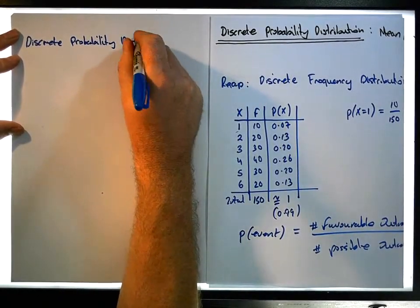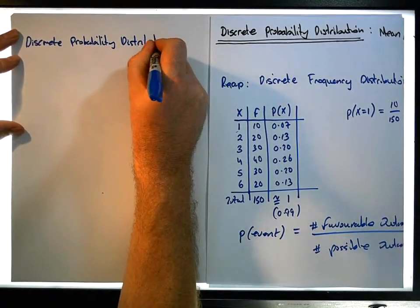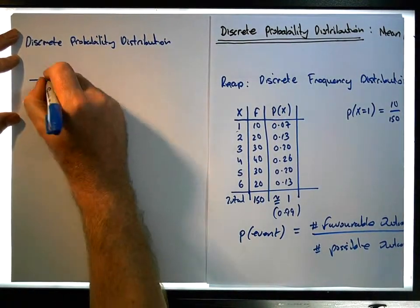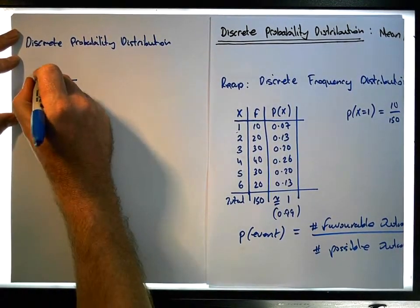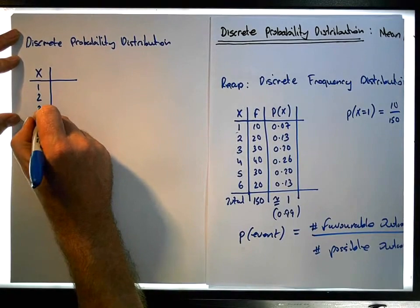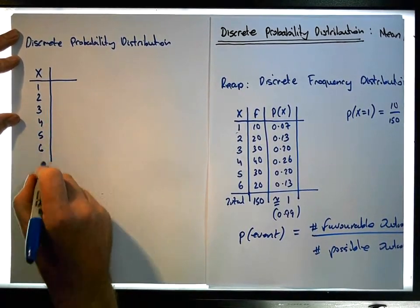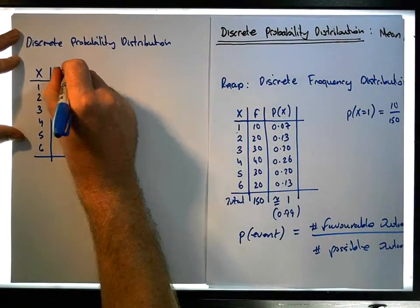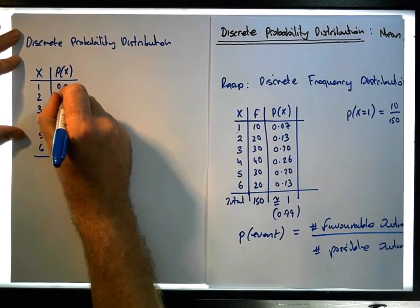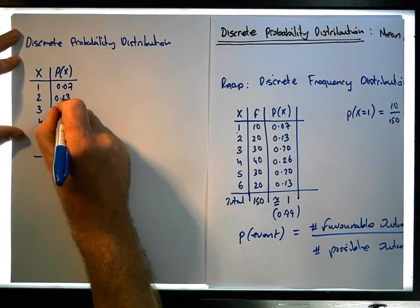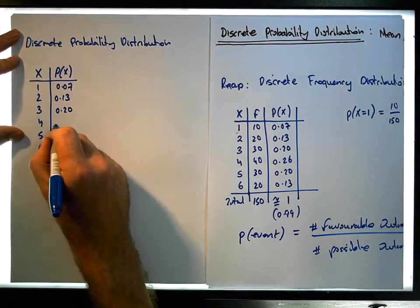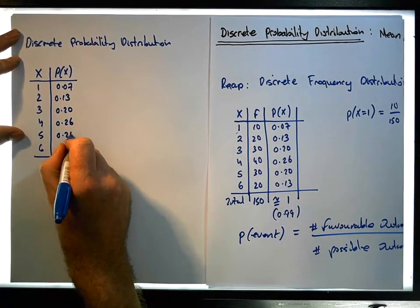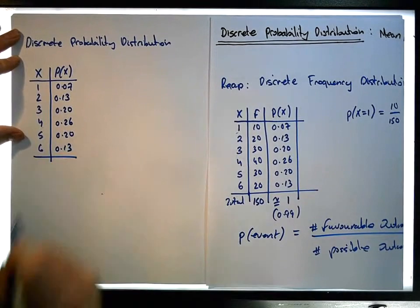Consider this distribution. We are presented with outcomes one, two, three, four, five, and six along with their probabilities P(x): 0.07, 0.13, 0.20, 0.26, 0.20, and 0.13.